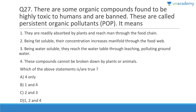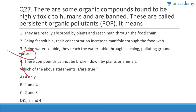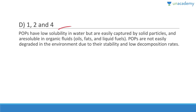Question twenty-seven: Persistent organic pollutants — they are readily absorbed by plants and reach humans through the food chain — correct. Being fat-soluble, their concentration increases manifold through the food web — correct. Being water-soluble — no, they are not water-soluble, otherwise they would be passed in urine. These compounds cannot be broken down by plants or animals — also correct. Answer is D, one, two, and four. They have low solubility in water but are soluble in organic fluids like oils, fats, and liquid fuels.